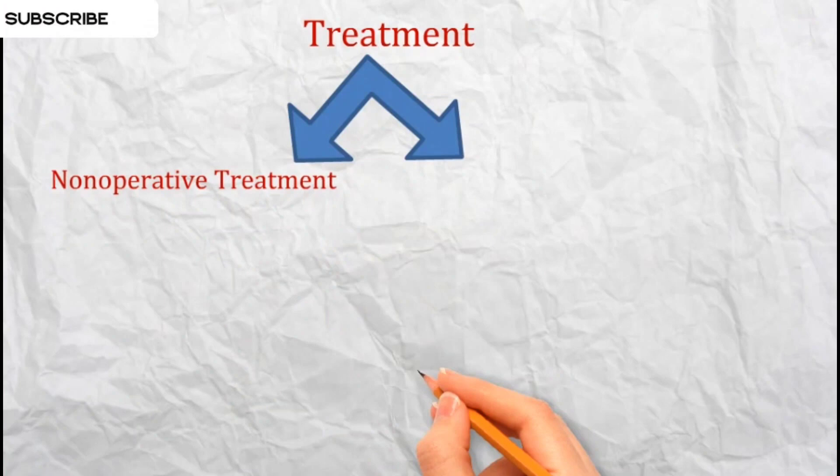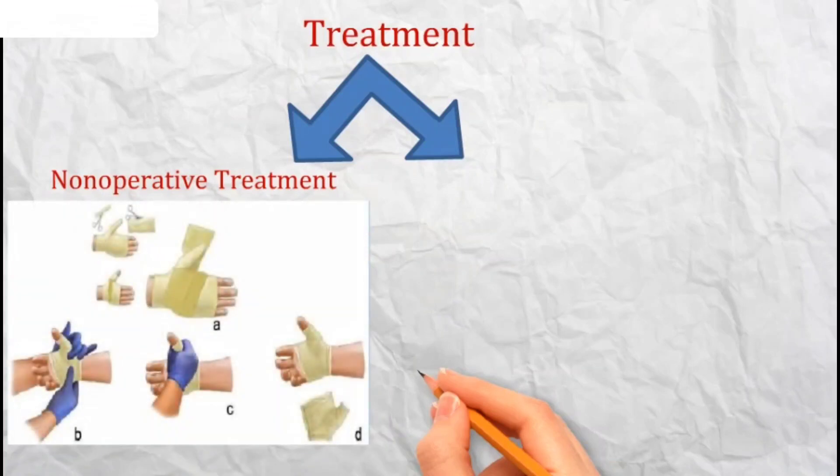Non-operative treatment: fractures with minimal disruption of the articular surface, typically less than 1-2 mm, and minimal displacement can often be treated non-operatively. This involves closed manipulation, reduction of the fracture, and maintaining the reduction by placing the thumb in a spica cast for a period of 6-8 weeks.